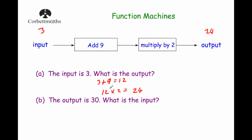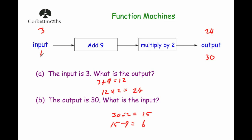Part B: the output is 30, work out the input. Whenever you've got the output and need to find the input, you work from right to left and use inverse operations. Instead of multiplying by 2, we divide by 2: 30 divided by 2 is 15. Then instead of adding 9, we subtract 9: 15 subtract 9 is 6. So the input is 6. Let's test it: 6 add 9 is 15, times by 2 is 30.